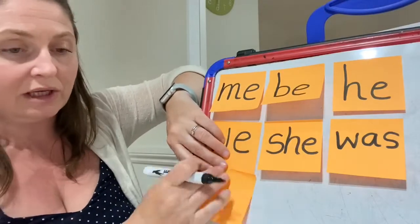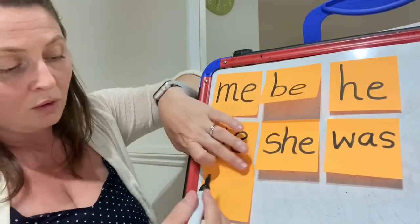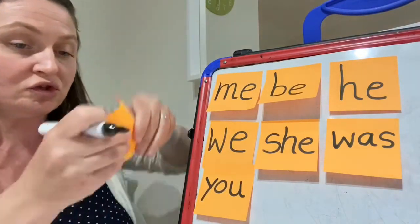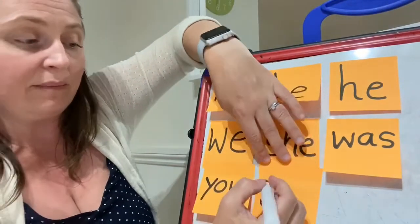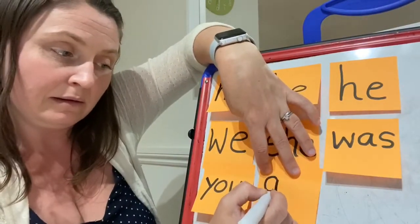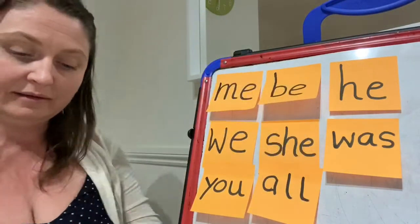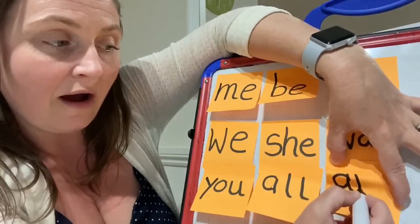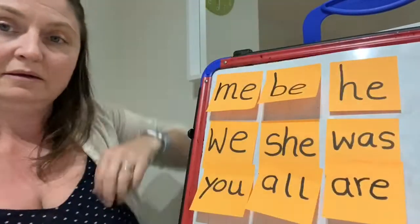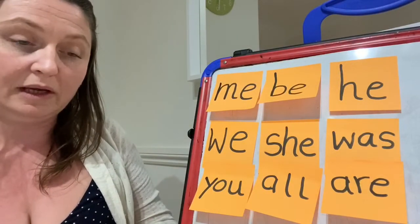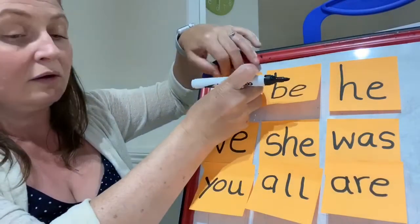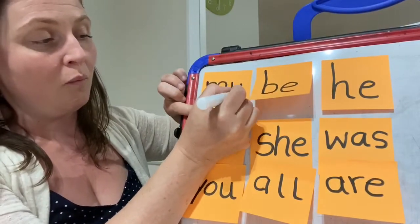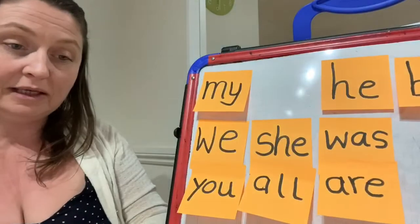Tricky word you. Y, o, u. Tricky word all. Can you remember all? A, double l. Tricky word are. A, r, e. I'm running out of room. I'm going to have to go on top. Tricky word my. M, y. And last, oh not the last one at all actually.